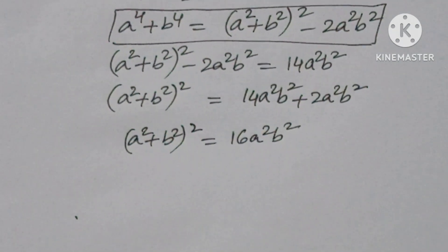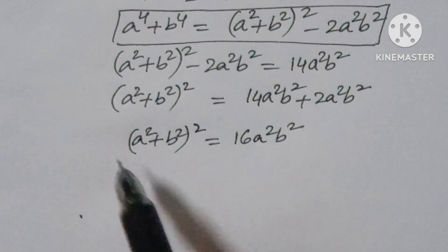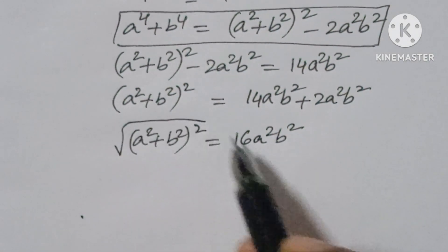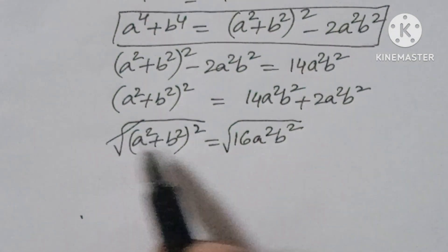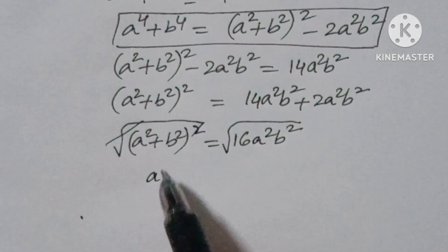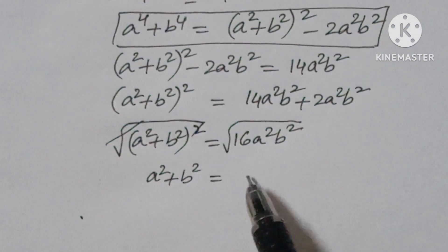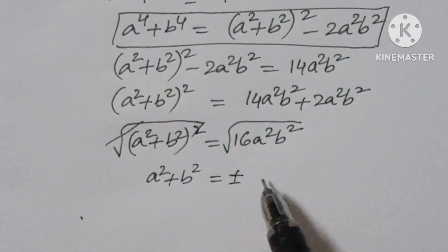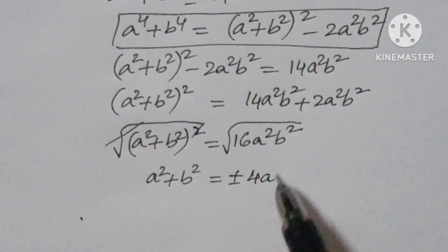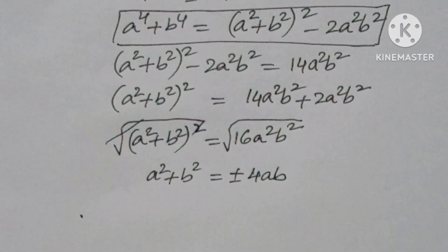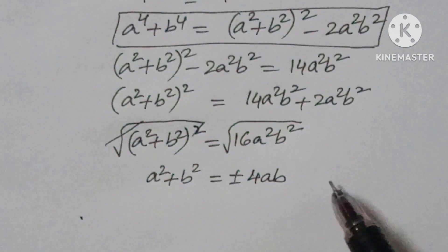So here I want to find the square root of both sides. Taking the square root, the square cancels and we get a² + b² equals plus or minus 4ab. Here we note that a, b are not equal to zero.